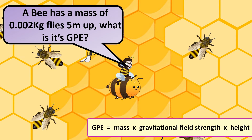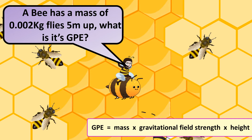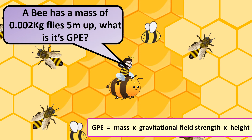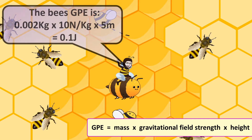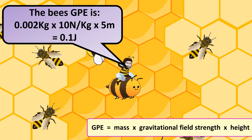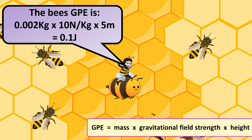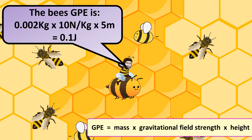A bee has a mass of 0.002 kilograms and flies 5 meters up. What is its GPE? The bee's GPE would be 0.002 times 10 times 5, which equals 0.1 joules.